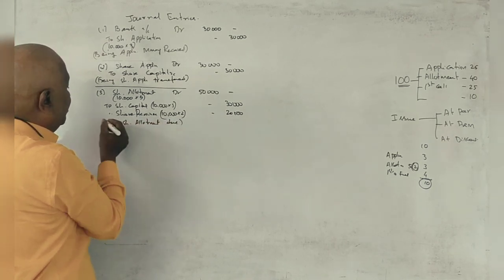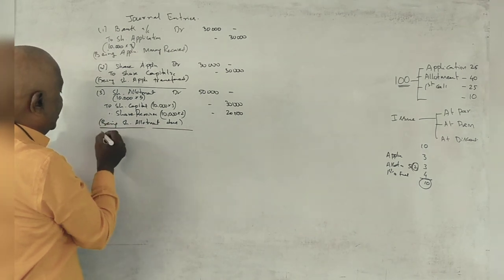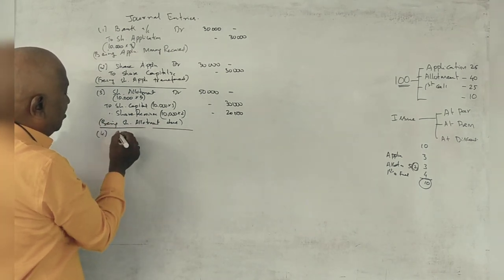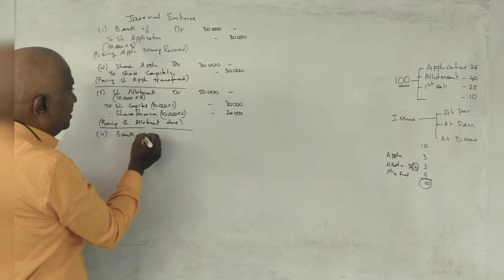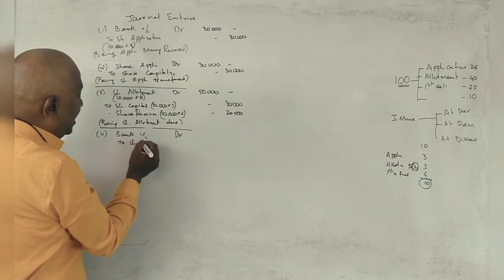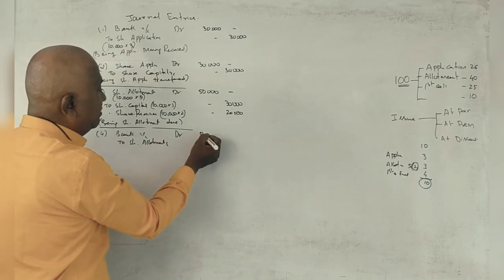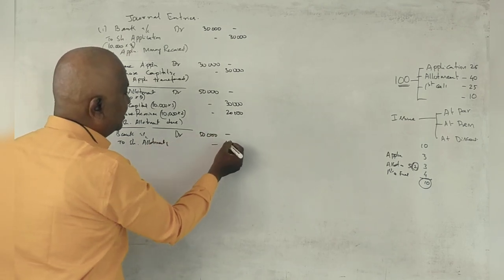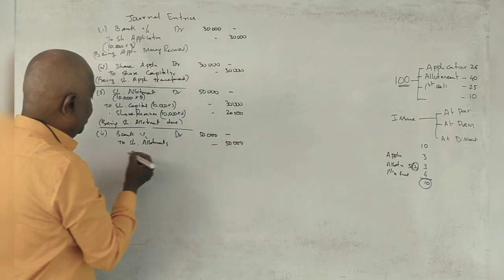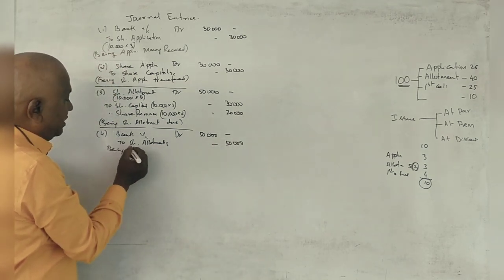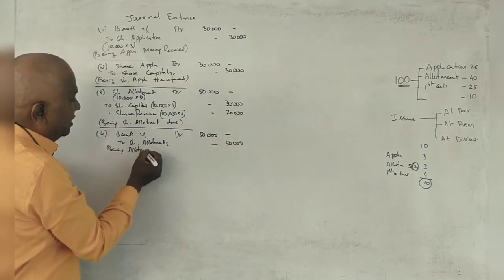The last but one is bank account debit to share allotment account, all the money due received. Being allotment money due.